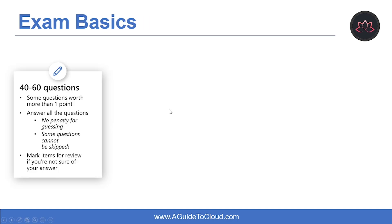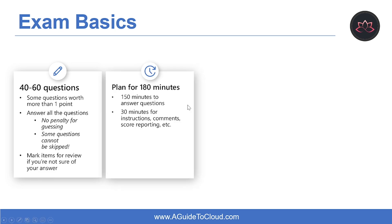Let's understand some exam basics. When you sit for a Microsoft exam, you can expect between 40 to 60 questions. Not all questions carry the same points — there are variations in how points are allocated. One recommendation: answer all the questions, because there is no penalty for guessing. Total examination time is around 180 minutes — plan 150 minutes for answering and 30 minutes for reviewing and instructions.